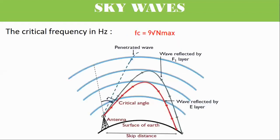The critical frequency is the maximum frequency where total internal reflection occurs in the ionosphere. The equation can be expressed as Fc equals 9 times the square root of n max.